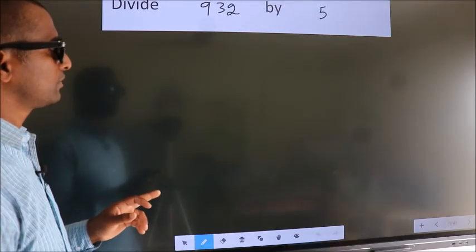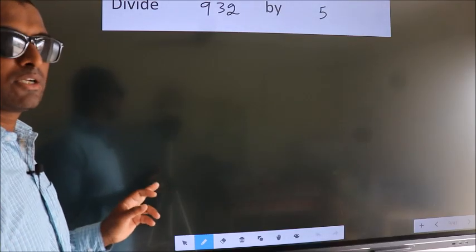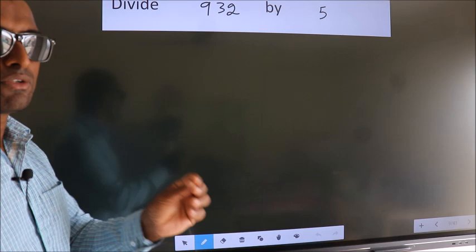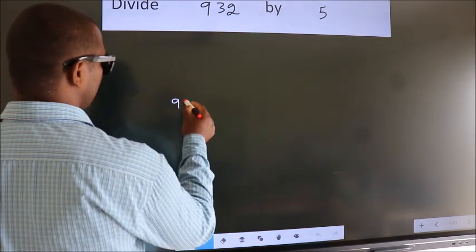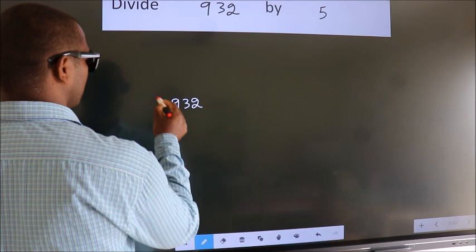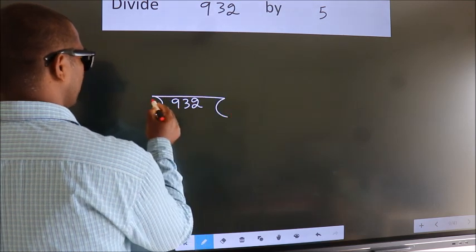Divide 932 by 5. To do this division we should frame it in this way. 932 here, 5 here.